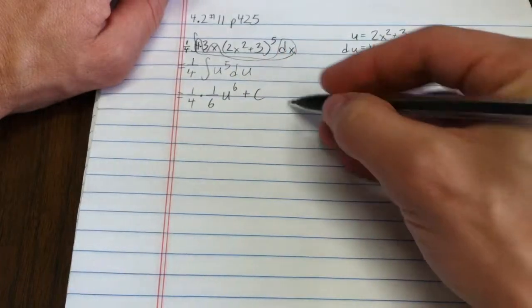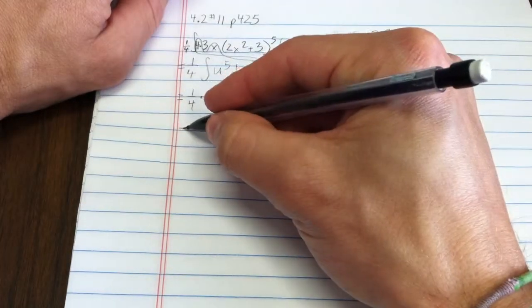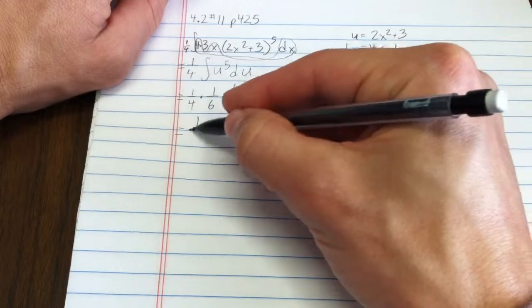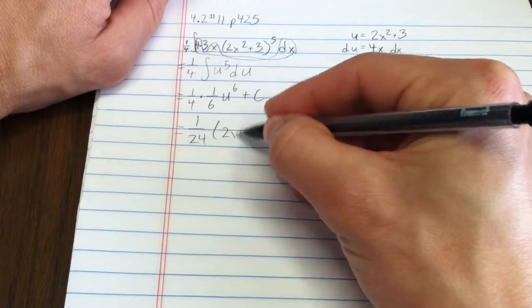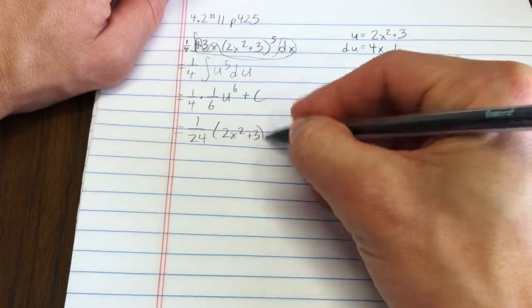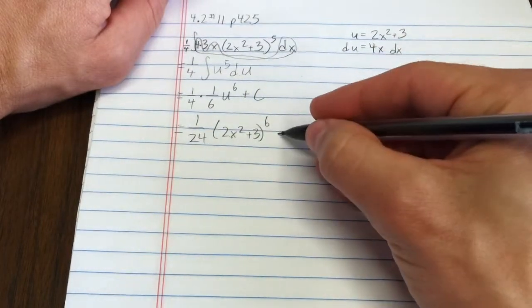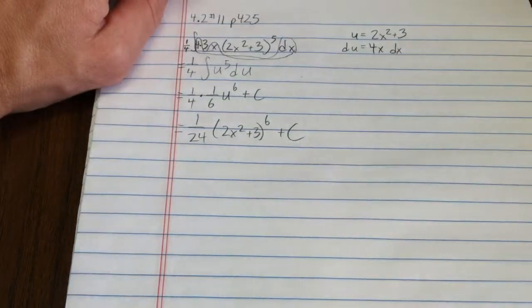I'll substitute back in, let's see, so that's 1 24th, u is 2x squared plus 3 to the 6th plus c. There you have it.